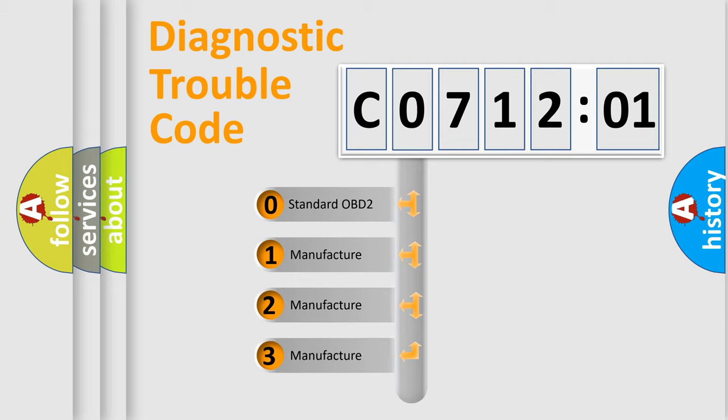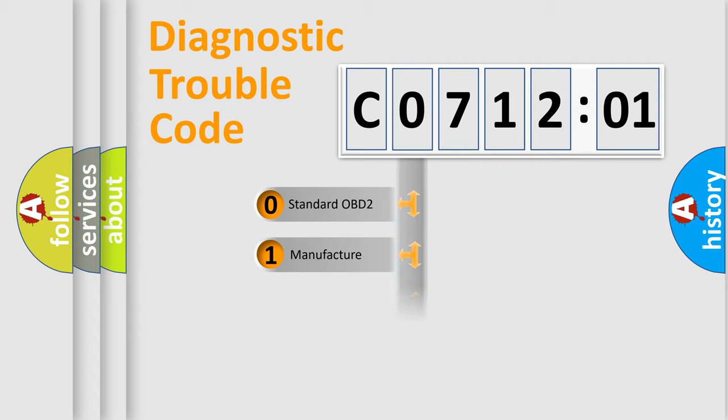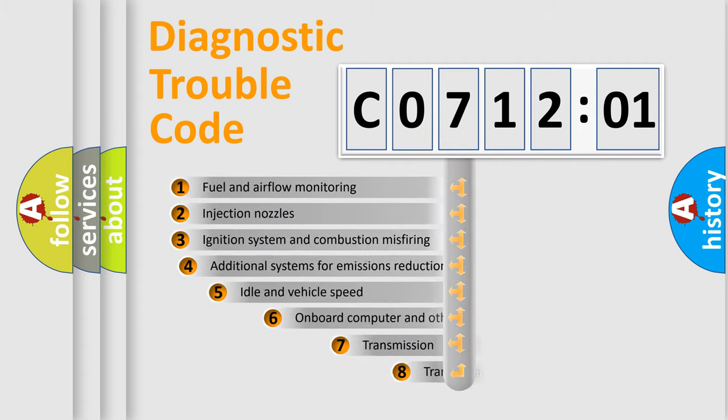If the second character is expressed as zero, it is a standardized error. In the case of numbers 1, 2, 3, it is a more prestigious expression of the car-specific error.